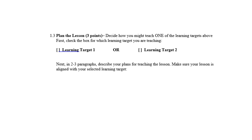The next thing you're going to do is plan a lesson for one of the learning targets — you don't have to plan a lesson for both. First, decide which learning target you want to detail a lesson for and check either learning target one or learning target two on the template. Don't check both. Then in just a few paragraphs, describe your plans for teaching the lesson. As I read it, I want to be able to see the lesson unfolding — it helps to say 'first I will do this, I will provide these materials; next I will do this; and finally I will conclude with this.' Just a simple explanation of how you would teach the learning target.